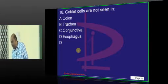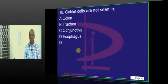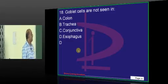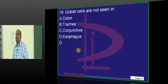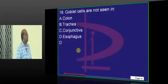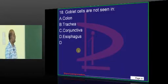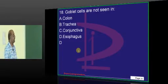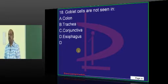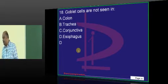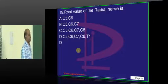Alright, a small interruption. Where do we see goblet cells? Goblet cells are those mucous secreting cells in conjunctiva, trachea, colon, and stomach. They are the classical locations, not in the case of the esophagus.